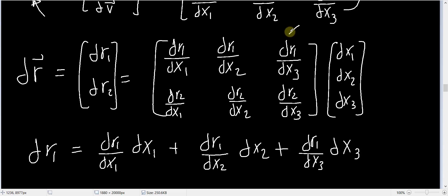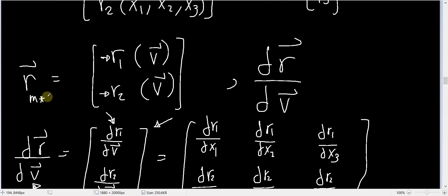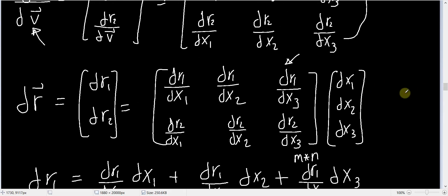This matrix is a very acceptable representation for dr/dv — the derivative of a vector with respect to a vector. In general, this matrix will have dimension m×n: if the original vector r is m×1 and vector v is n×1, the resulting matrix is m×n. This matrix is called the Jacobian matrix, and it won't generally be square.